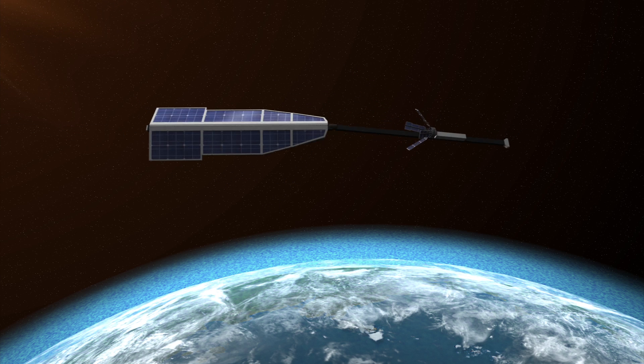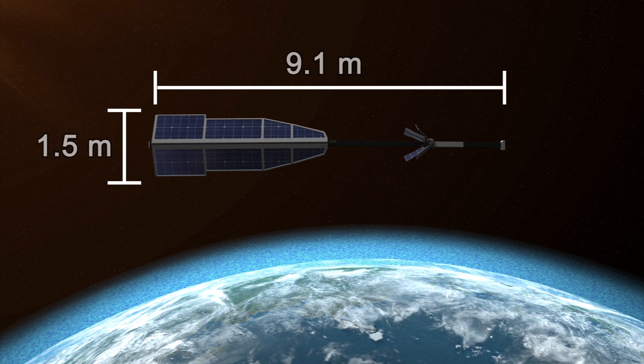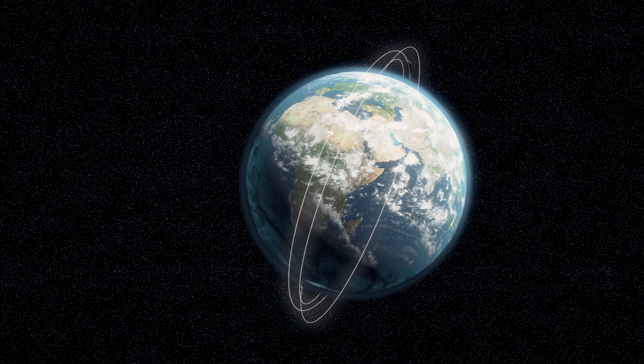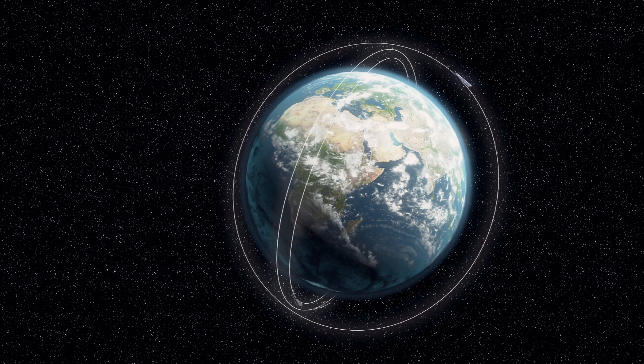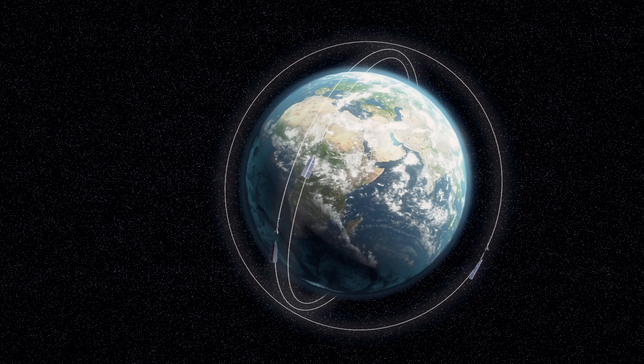Each of the three satellites is 9.1 meters long and 1.5 meters wide. Two satellites will orbit almost side by side, while the third will drift away until it crosses the path of the other two at an angle of 90 degrees at a higher orbit of 530 kilometers.